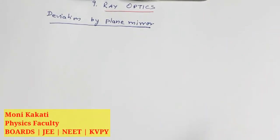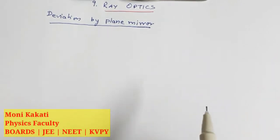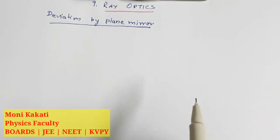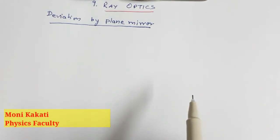Hello everyone, welcome to my channel. In this video, I am going to discuss the topic deviation by plane mirror from chapter number 9, Ray Optics, volume 2 of the NCERT for class 12 students.